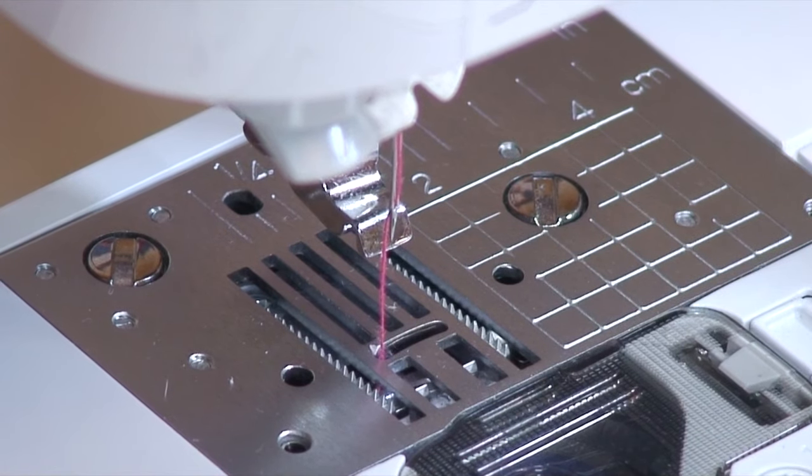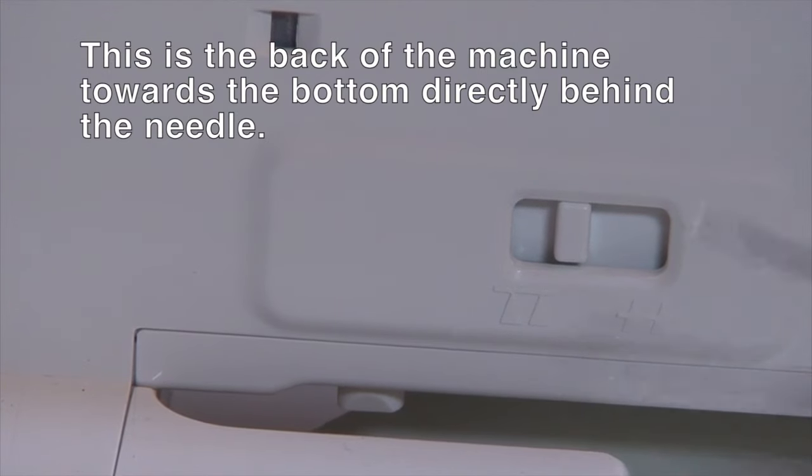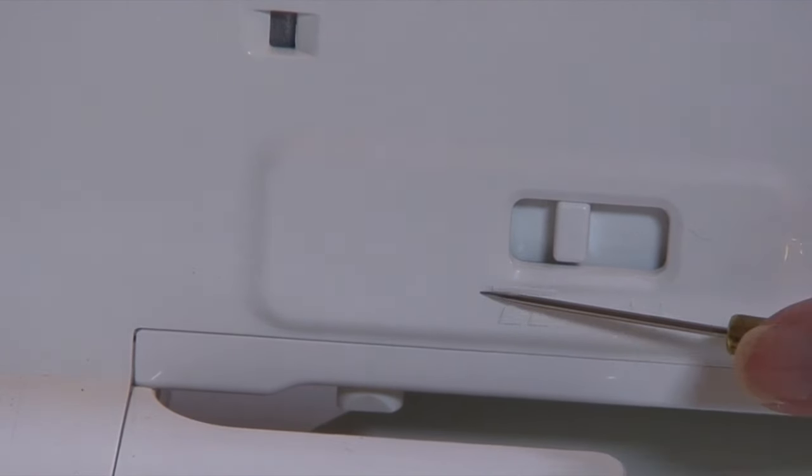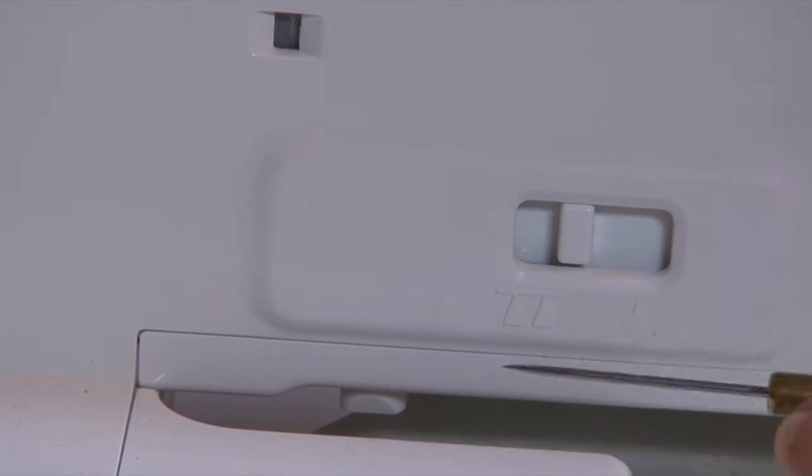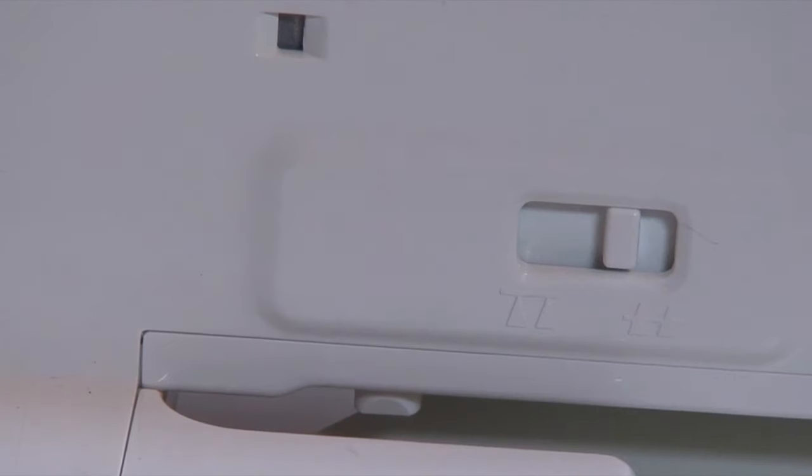So let me show you that button from the back. So on the back of the machine, the button for dropping the feed dogs is right there. And you probably can't see it, but there are two little indicators here. This one has two triangles to represent the serrations and a line through the middle, so the feed dogs would be up. This one has two little triangles with a line across the top, so that would be that they're down. So to bring it back into the normal position, we'll just pull that button to the right.